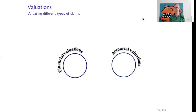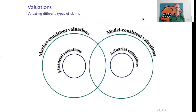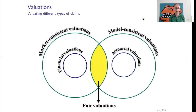In summary: we start with financial valuations and actuarial valuations, which are generally disjunct classes. We extend financial valuations to market consistent valuations, and extend actuarial valuations to model consistent valuations. The intersection of market consistent and model consistent valuations is what we call fair valuation.